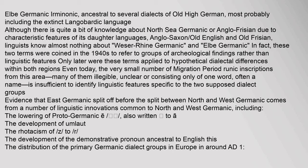Evidence that East Germanic split off before the split between North and West Germanic comes from a number of linguistic innovations common to North and West Germanic, including the lowering of Proto-Germanic 'e' to 'a', the development of umlaut, the rhoticism of 'z' to 'r', and the development of the demonstrative pronoun ancestral to English 'this'. The distribution of the primary Germanic dialect groups in Europe was established in around AD 1.